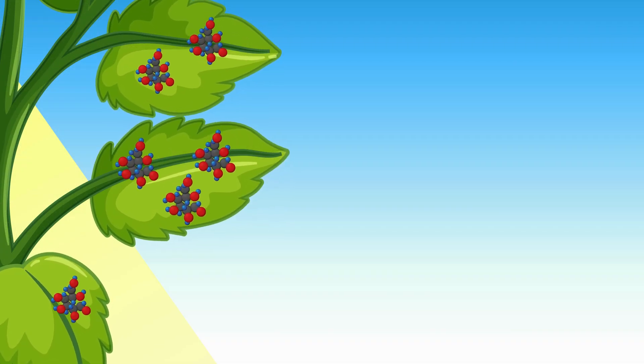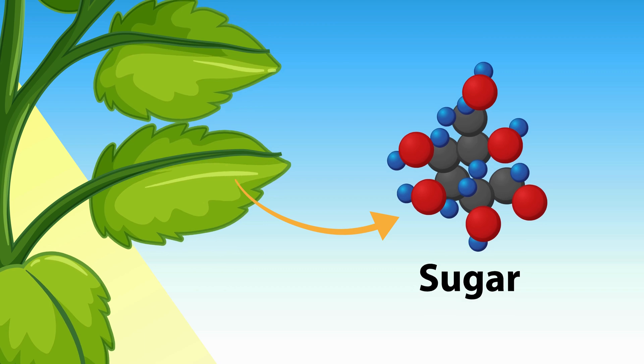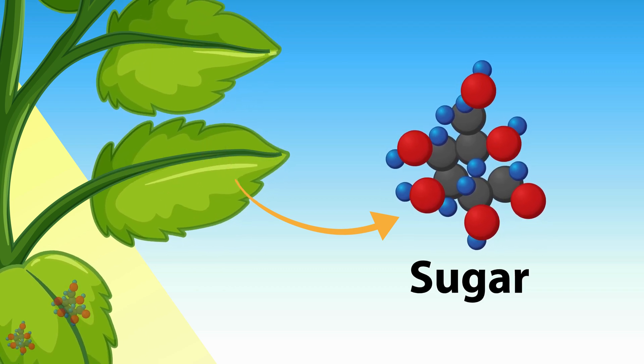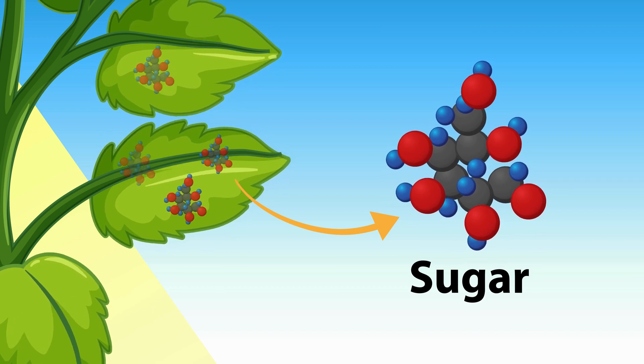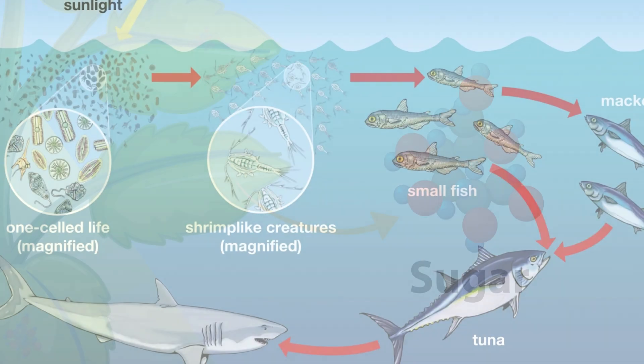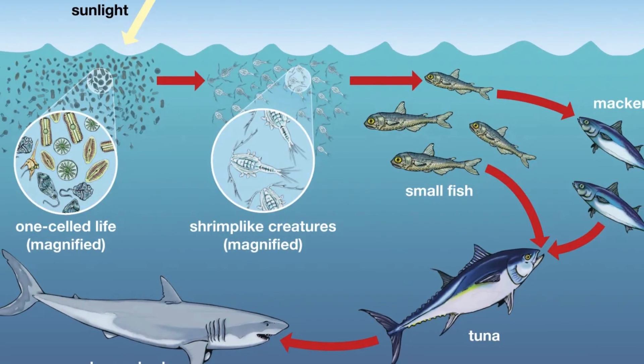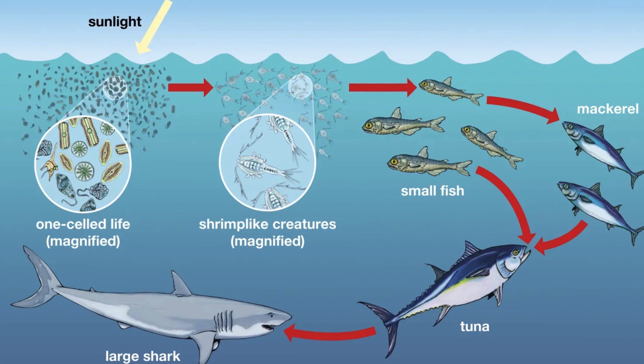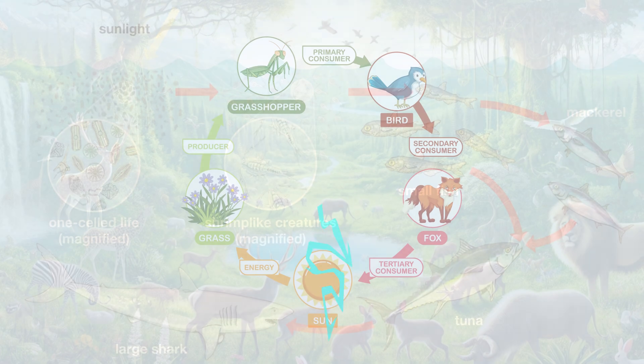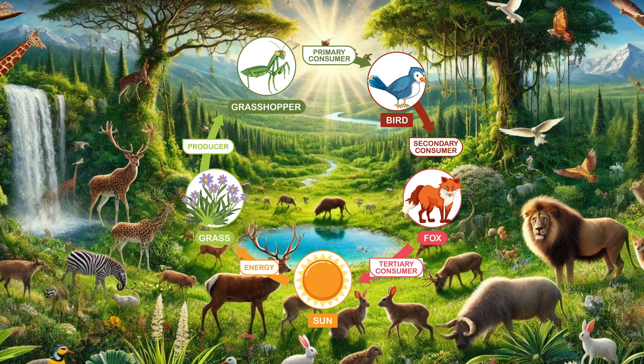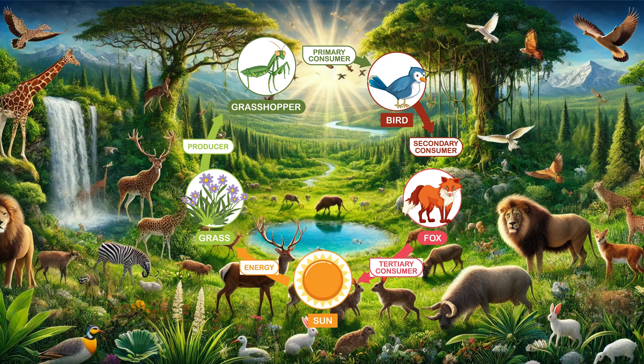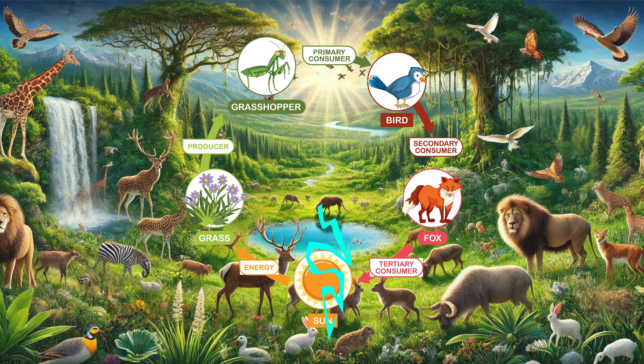Plants occupy a unique role in the food chain because they are capable of directly converting sunlight into energy through the process of photosynthesis. This ability allows them to serve as primary producers, forming the foundation of nearly all ecosystems. The entire animal kingdom is dependent on plants for food and energy, either directly or indirectly. Herbivores consume plants to obtain energy, and in turn, carnivores feed on herbivores. Thus plants provide the essential energy source that sustains all levels of the food chain.